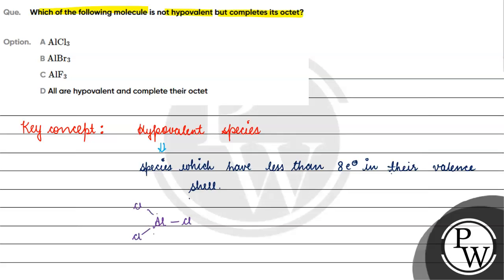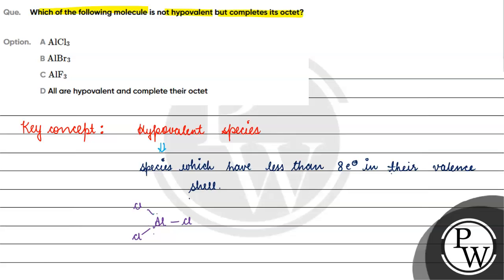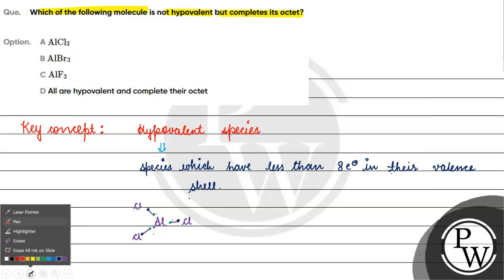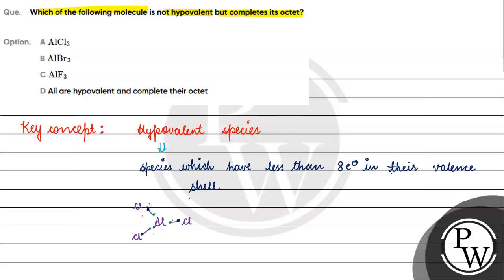In AlCl₃, aluminum is the central atom bonded to chlorine atoms. Looking at its valence shell, the valence shell has only 6 electrons. So this is a hypovalent species.